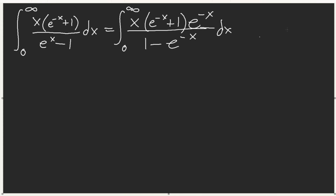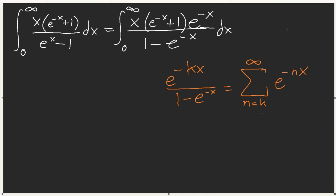We can actually find — let me generalize: e^(-kx) / (1 - e^(-x)) equals the sum from n=k to infinity of e^(-nx). That's geometric series — the first term is on top. Be careful with the starting index depending on your first term.